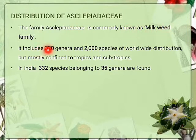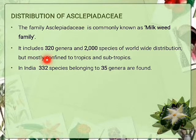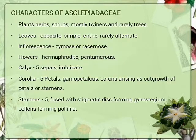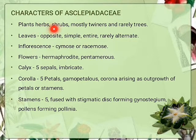Next, distribution of Asclepiadaceae. The family Asclepiadaceae is commonly known as the milkweed family. It includes 320 genera and 2000 species, worldwide in distribution but mostly confined to tropic and subtropic regions. In India, 332 species belonging to 35 genera are found.